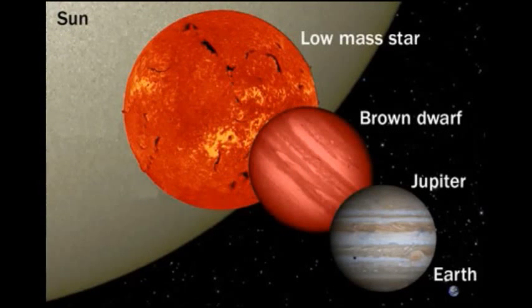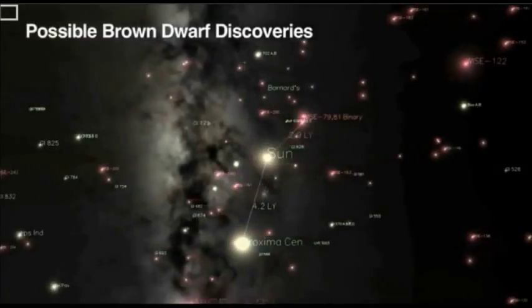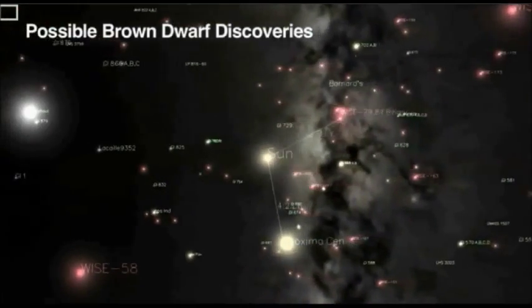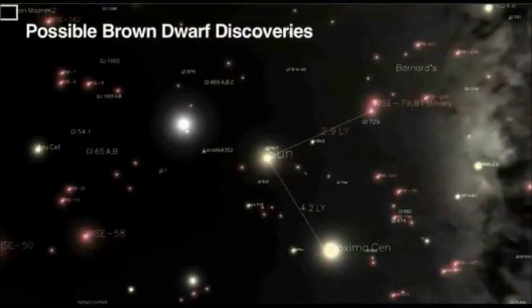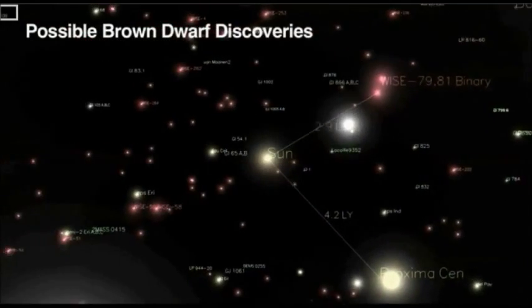There are twice as many failed stars than stars that shine in the universe. Brown dwarfs are failed stars. In some ways, a failed star resembles planet Jupiter, which is named Brihaspati in Vedic texts.